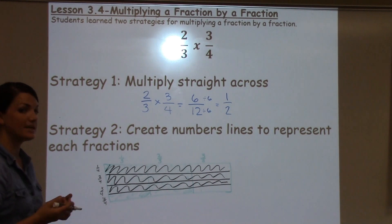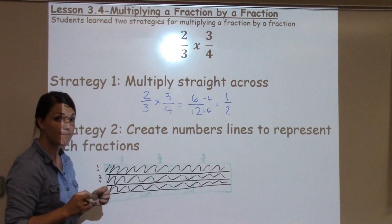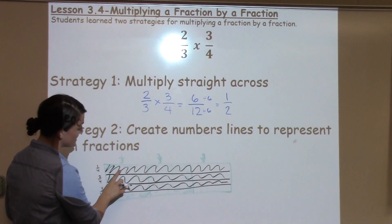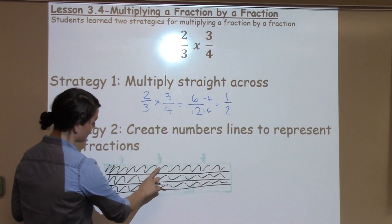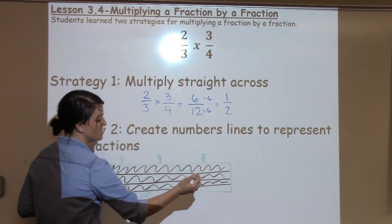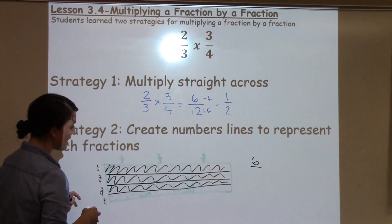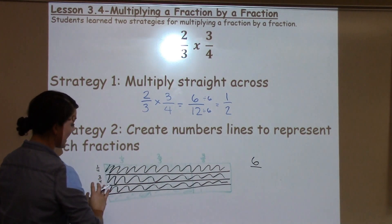Now, to find my answer, we tell students to look for the amount of spaces that are colored in by both colors. So, I have this one that's black and green. Another here. So, 1, 2, 3, 4, 5, 6. So, I have 6 total that are black and green.